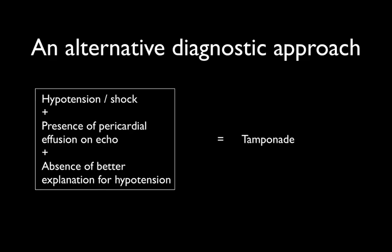An alternative diagnostic approach in the peri-arrest situation is to think of a different triad: the presence of a peri-arrest patient who is hypotensive or shocked, who has a pericardial effusion on echo, and no better explanation for the hypotension — this can be thought of as having tamponade.